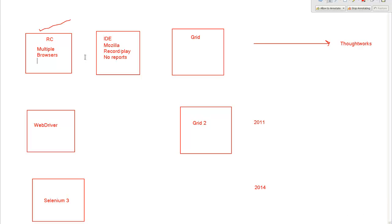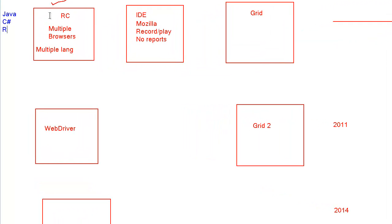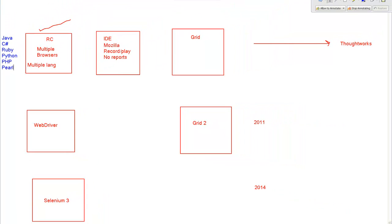RC had support for multiple browsers. Along with that, RC utilized multiple languages as well. Selenium RC can be implemented in Java, C#, Ruby, Python, PHP, and Perl. It got famous with only Java and C#. Ruby and Python are also used, but most companies in the industry are using Java because Java is an open source language.